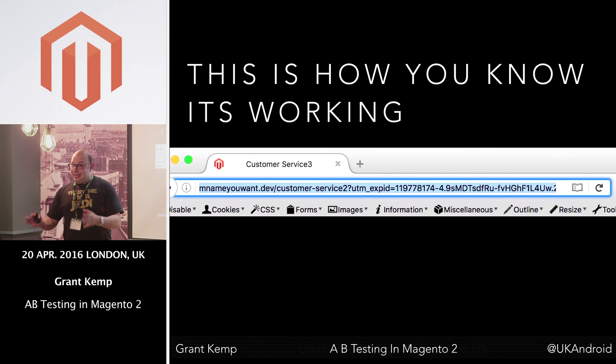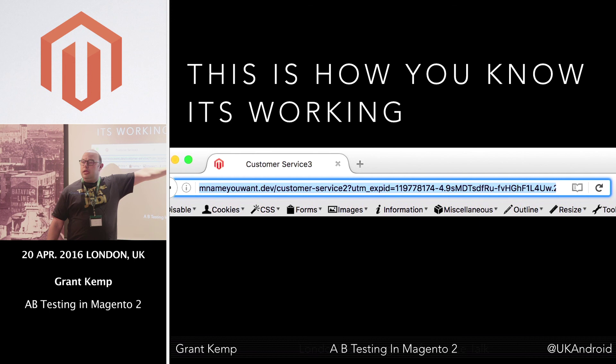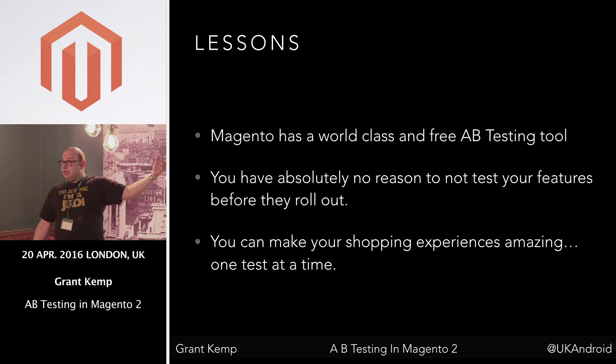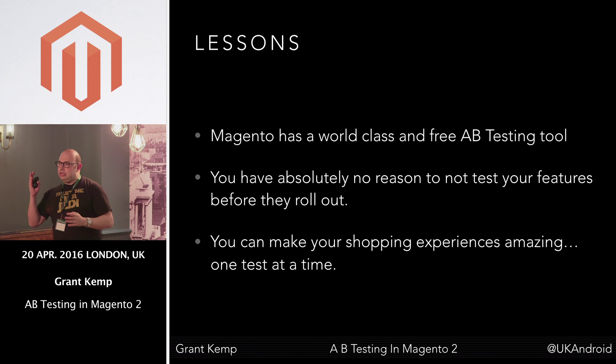The way you know it's working — and this is something I found really interesting — is that on my local development environment it's now redirected my customer service page to 'customer service 2' with a whole load of parameters afterwards that describe what the experiment is. If you see that, you're winning. You're on your path to making more money for the customer. What I learned: this is a world-class A-B testing tool. There's absolutely no reason why you can't go make tons of money for your customers right now. Go out there, learn more about your customers, try out new stuff. It's completely safe, it works really well, and it's fast.